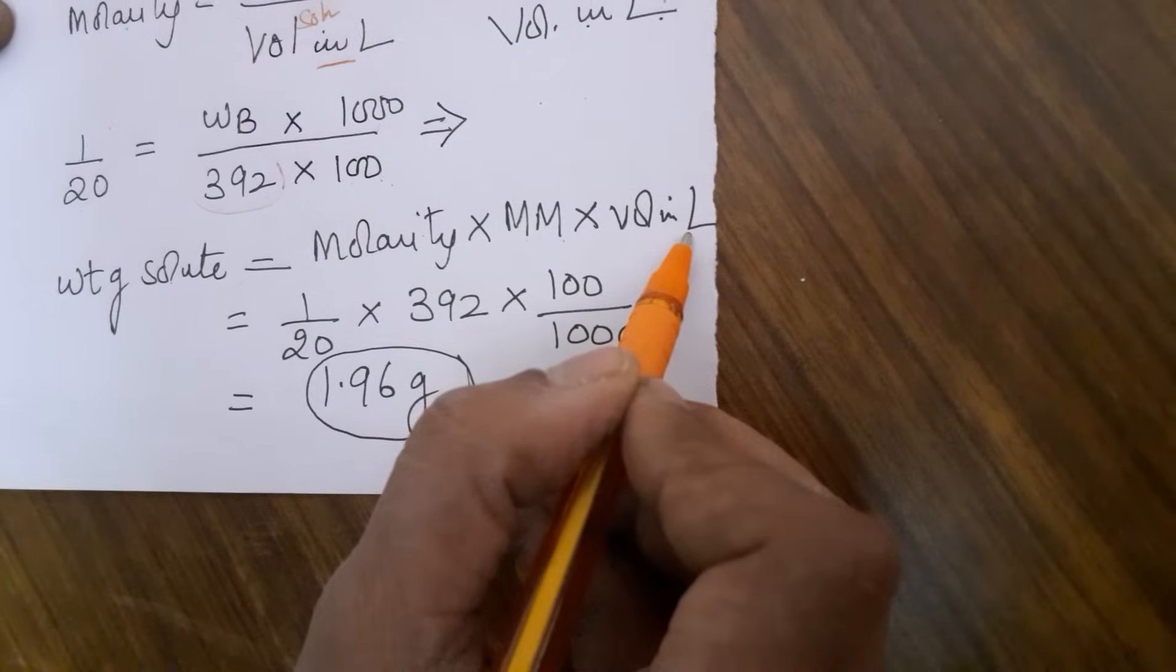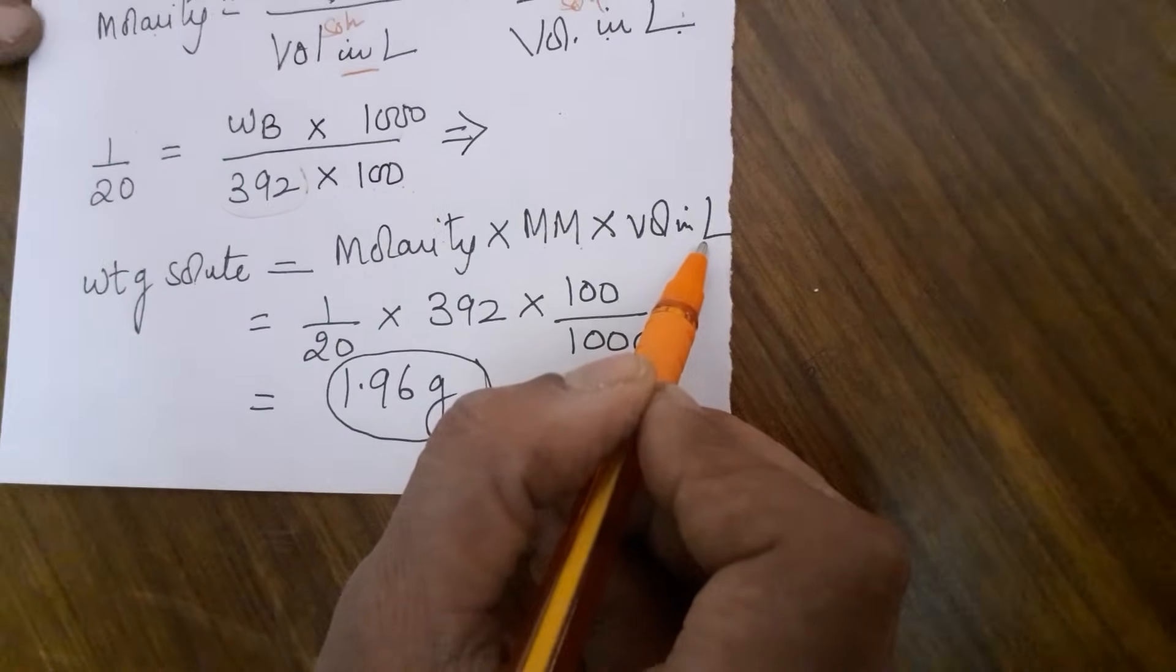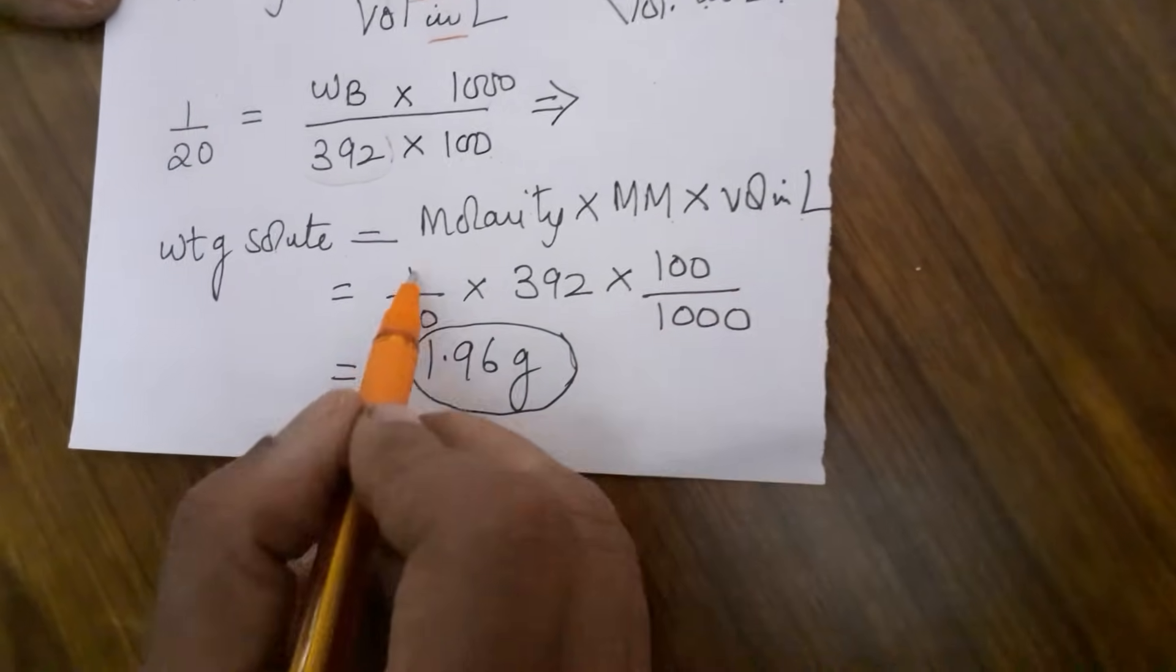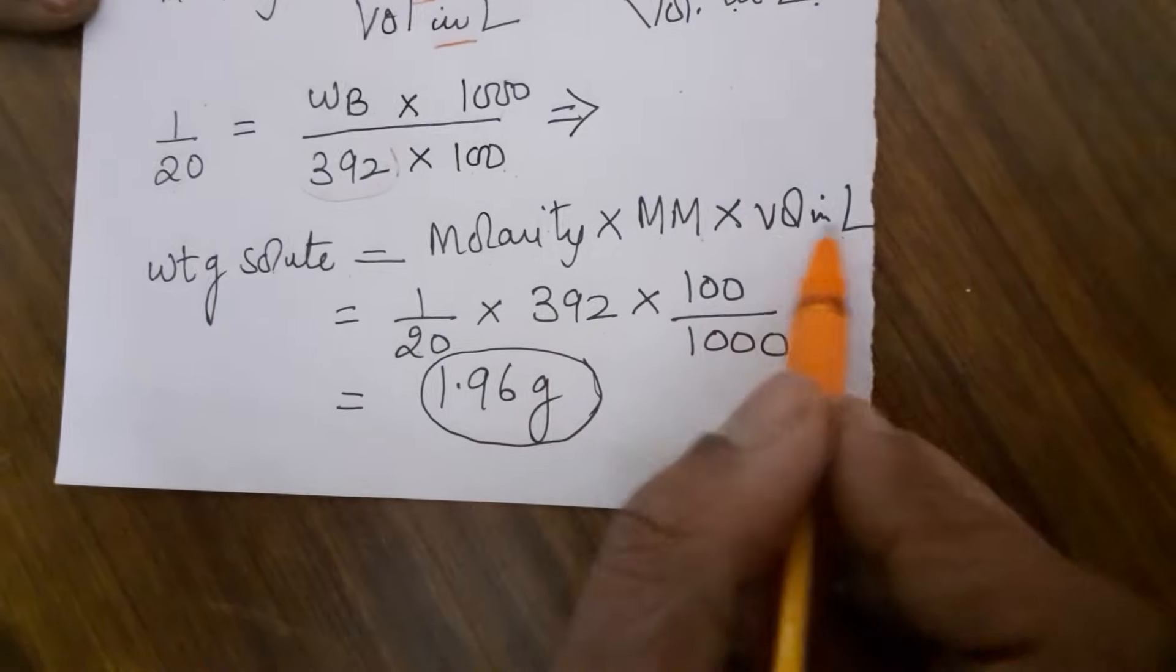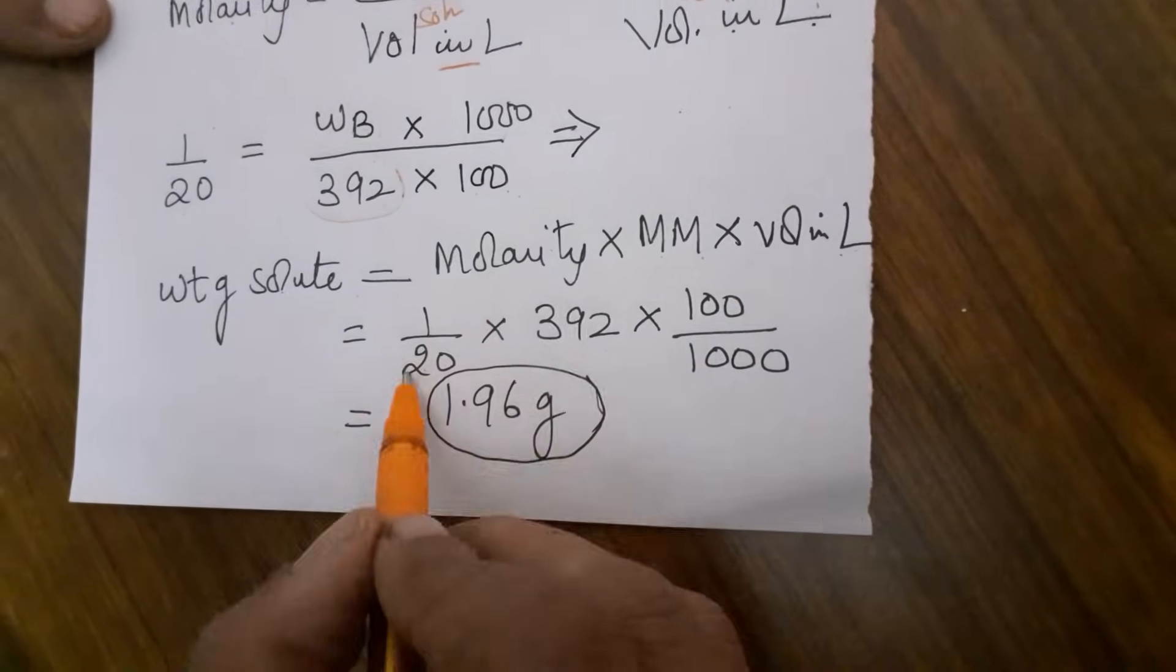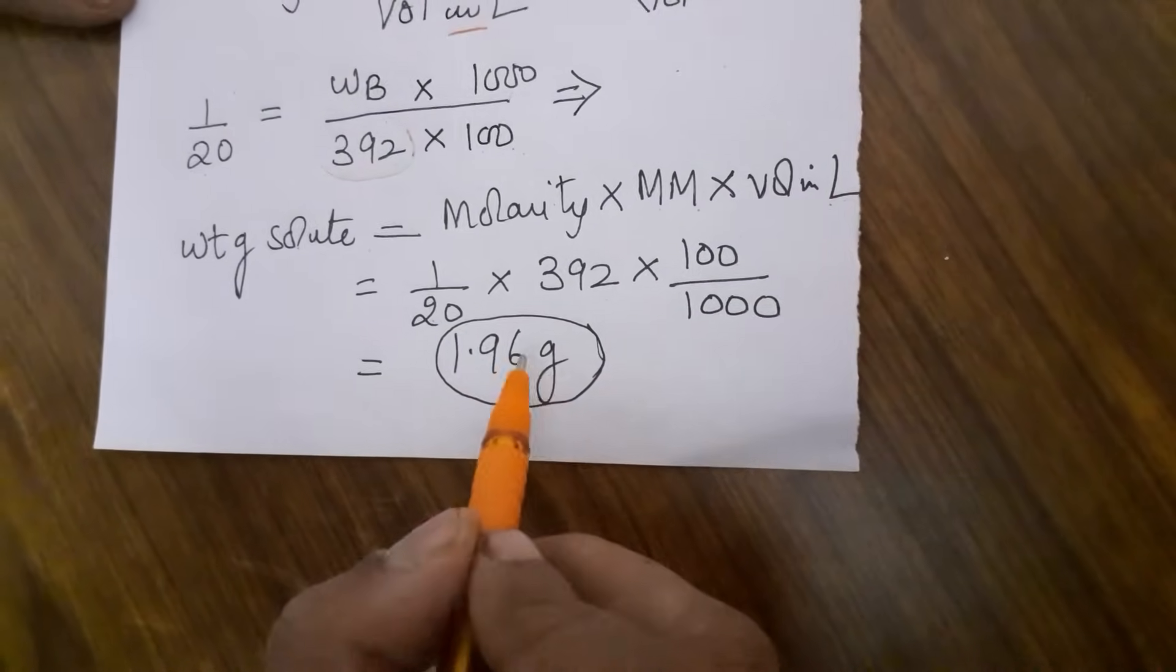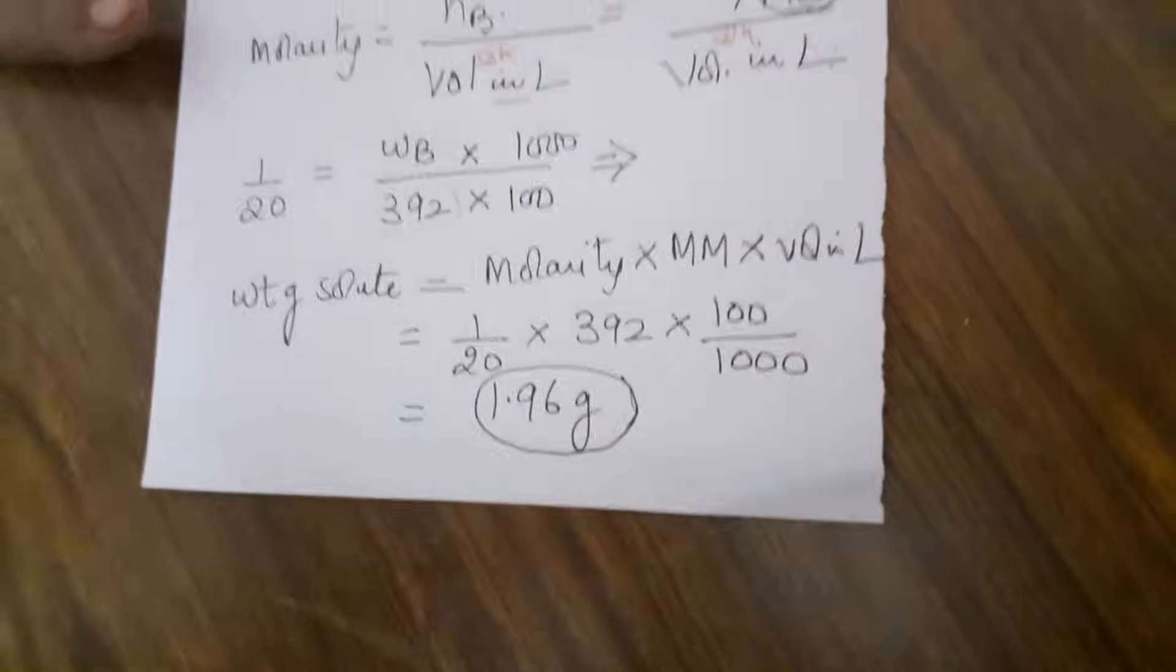If you have 250 ml in your school, you will use 250 ml. But otherwise normally 100 ml measuring flask is more than enough for one set of titrations. So 1 by 20 is given to you, 392 is the molecular mass, volume of solution is 100 ml. So your value is 1.96 if you are preparing 100 ml. Now we will do the preparation of the solution.